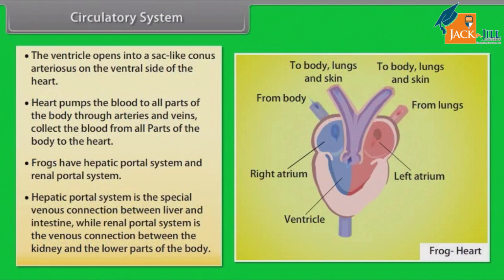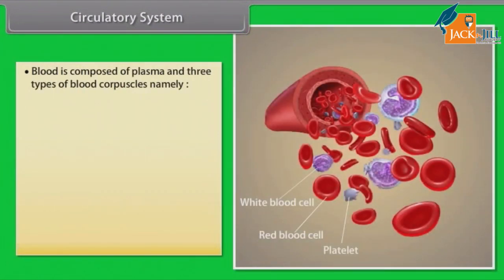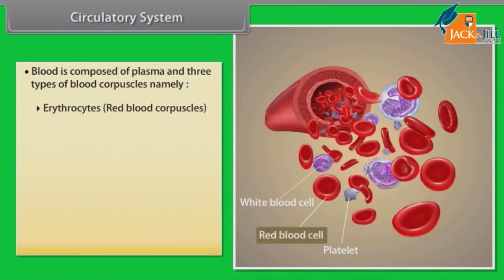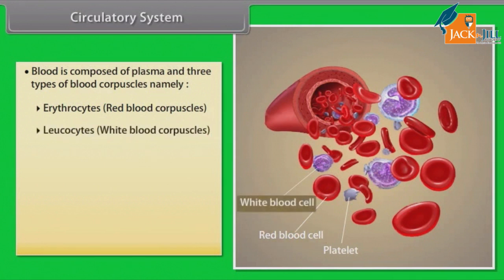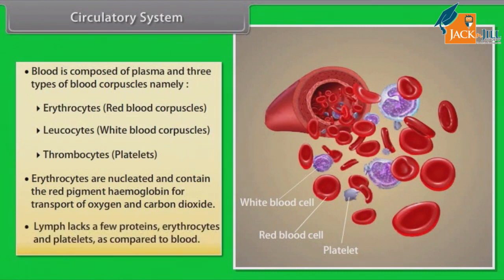The renal portal system is the venous connection between the kidney and the lower parts of the body. Blood is composed of plasma and three types of blood corpuscles: erythrocytes (red blood corpuscles), leucocytes (white blood corpuscles), and thrombocytes (platelets). Erythrocytes are nucleated and contain the red pigment hemoglobin for transport of oxygen and carbon dioxide. Lymph lacks a few proteins, erythrocytes, and platelets as compared to blood.